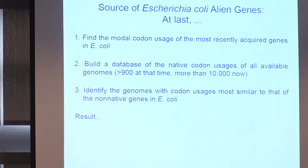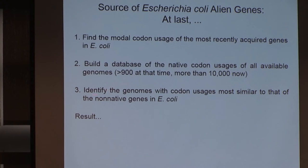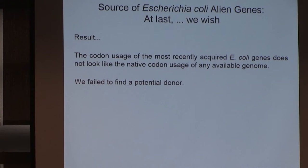So this is our starting point. We wanted to find out where the alien genes come from. From E. coli or Salmonella, we can ask what the alien genes are. We built a database of the native codon usages of all genomes we could lay our hands on. Then we asked: who looks like a donor of the genes that are alien to E. coli? The answer was no one. That was a little depressing — only ten years of work, five years of intense work. We failed to find a donor, and we still don't have a donor in the sense we were originally looking for it.